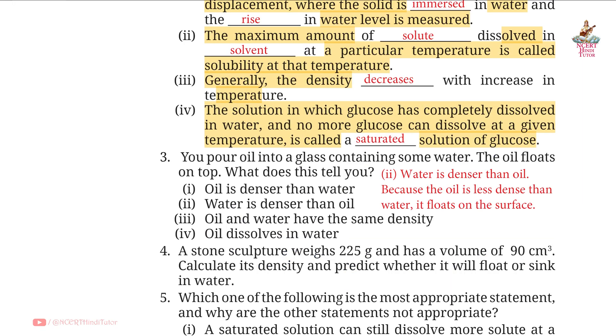Question 3: You pour oil into a glass containing some water. The oil floats on top. What does this tell you? Answer: Water is denser than oil. Because the oil is less dense than water, it floats on the surface.